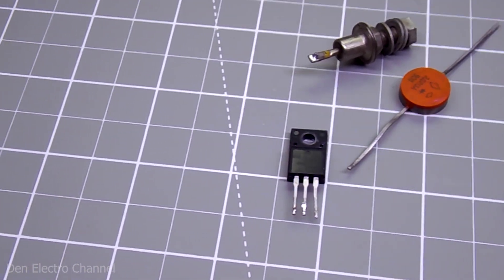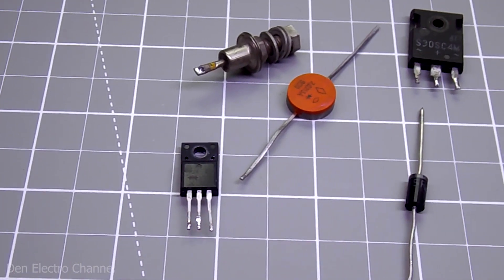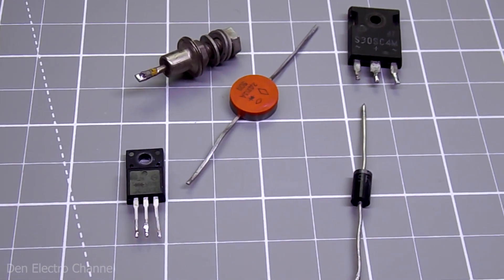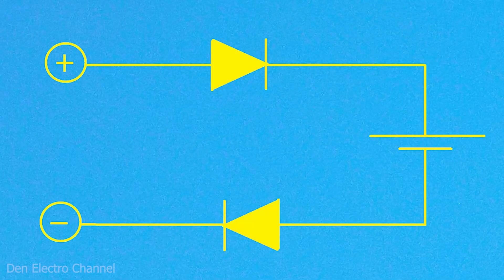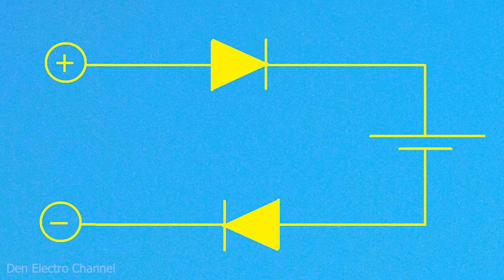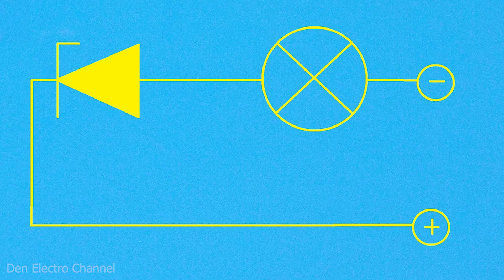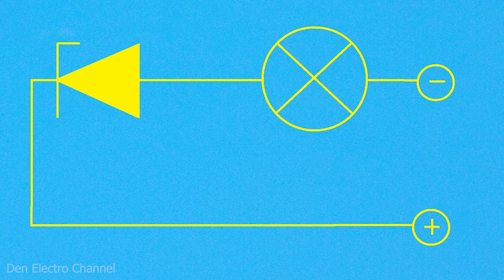The voltage drop itself cannot be attributed to a bad or good property of diodes. In some cases, it helps to extinguish excess voltage, from several hundred millivolts if you use ordinary diodes, to several tens of volts if you take Zener diodes.